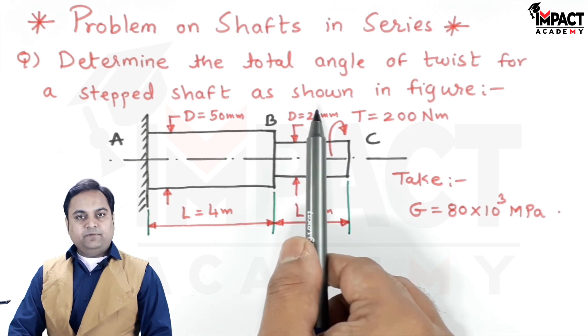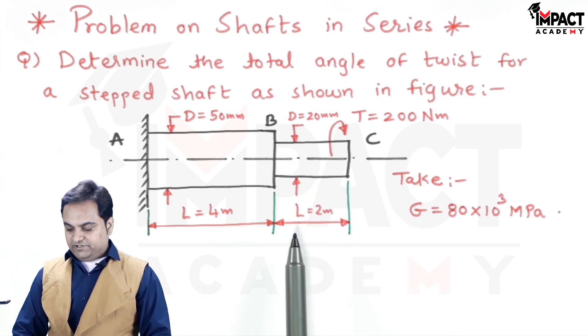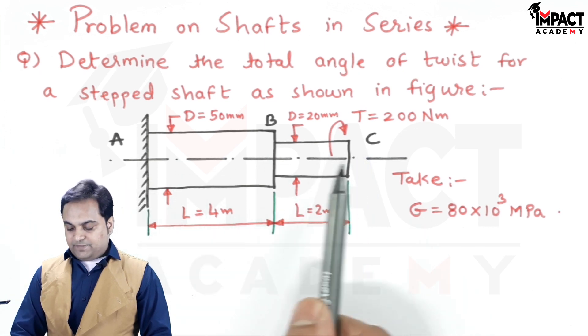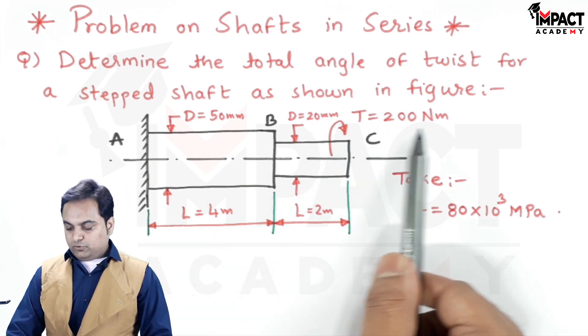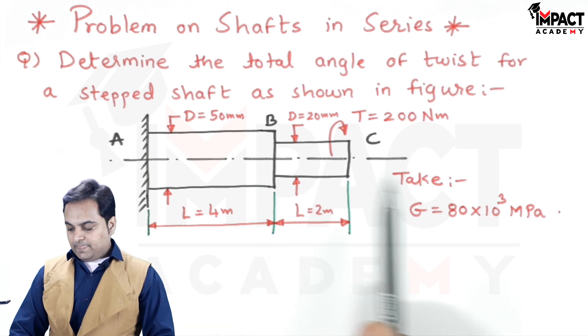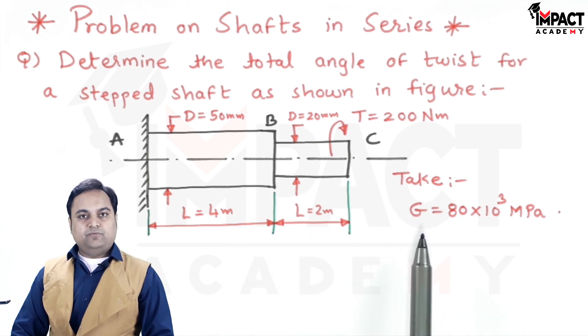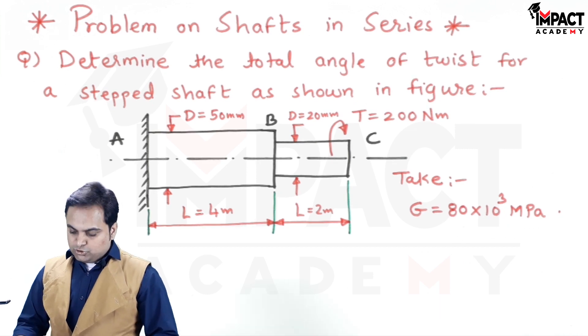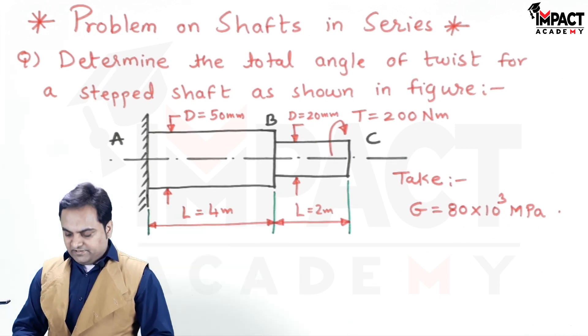It is connected to another shaft BC having diameter D=20mm and length L=2m. At point C of this stepped shaft, a torque T=200 Nm is being applied. The modulus of rigidity G is 80×10³ MPa.